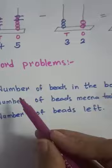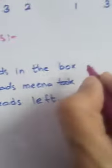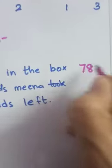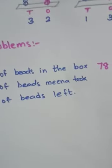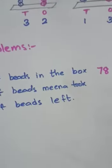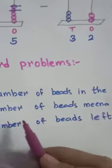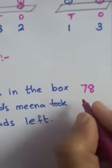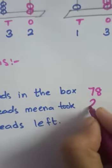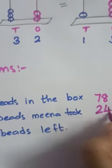Now, see here. Number of beads in the box, 78. Mina took 24 beads to make a necklace. So, number of beads Mina took 24.